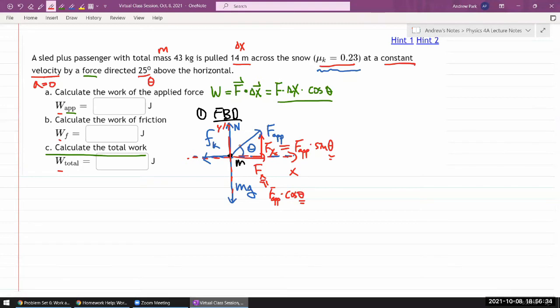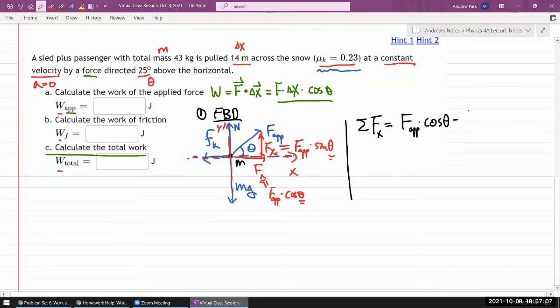That's step number two and three, breaking down forces into components, and finally, I'm ready to do step number four, writing down my Newton's second law equation. So let's write it down. I need two equations, one for the x direction, one for the y direction. So my net force in the x direction is going to be x component of applied force minus the friction force. F applied cosine theta minus the kinetic friction force, I think that's all. So that's equal to zero because zero acceleration.